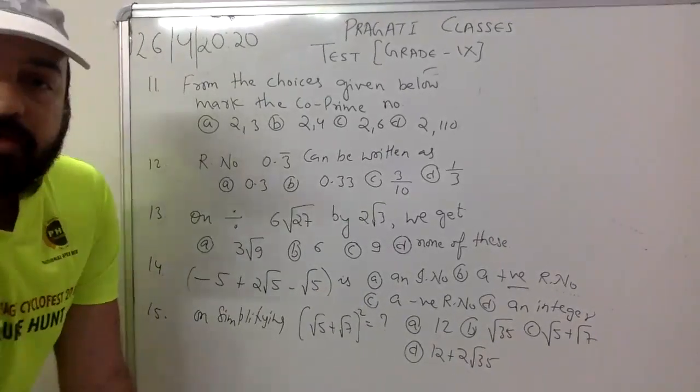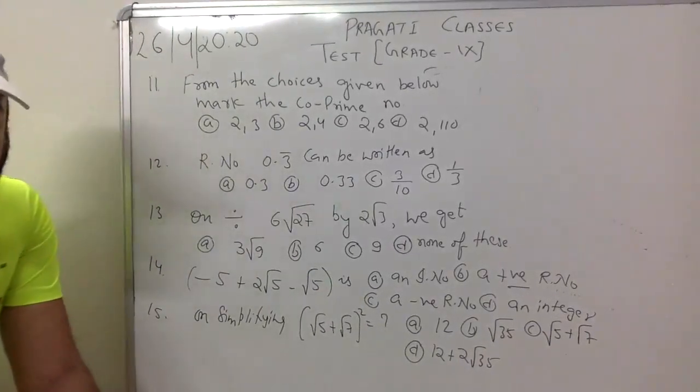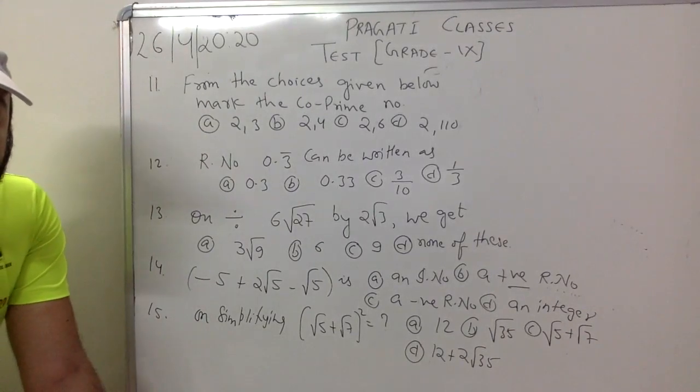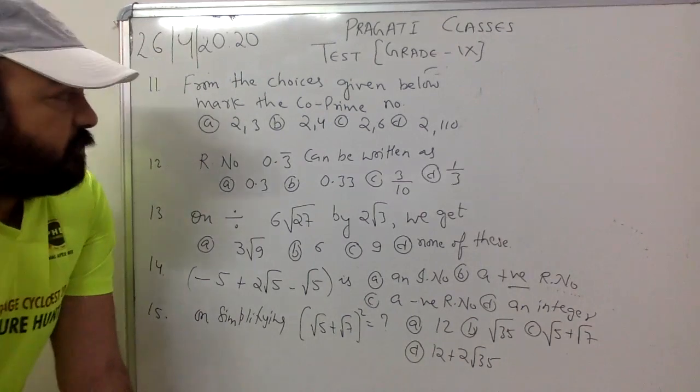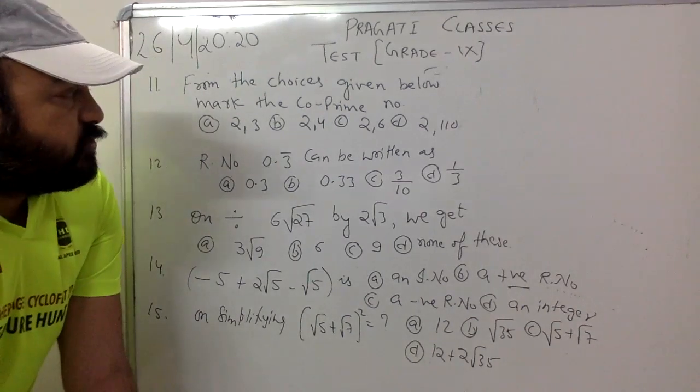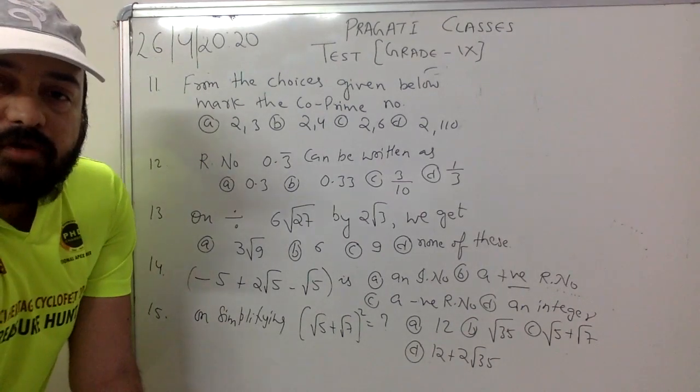The first one, question 11. From the choices given below, mark the co-prime number. Option A: 2, 3. Option B: 2, 4. Option C: 2, 6. And option D is 2, 110.